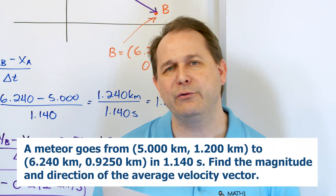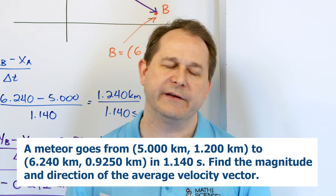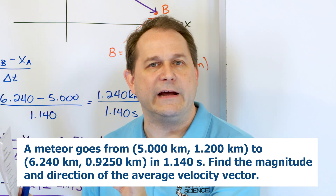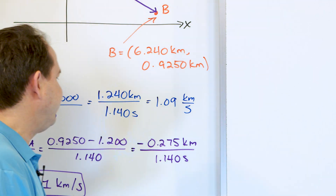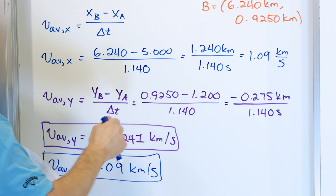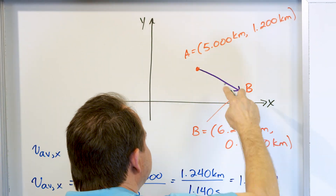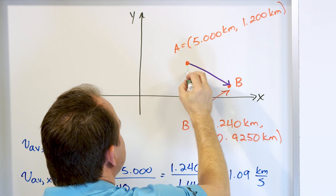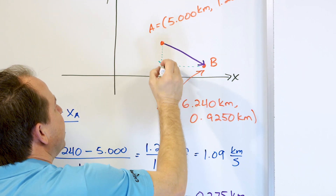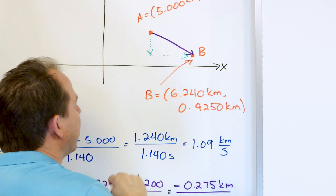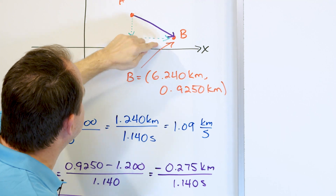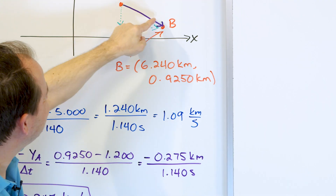Part B asks for the magnitude and direction of the average velocity vector. There are really two ways to represent a vector. The first way is to specify the x and y components, which is what we've done. The path and velocity are slanted, but we can break it into an x-component and a y-component, which we just calculated. The second way is to specify the length of the vector arrow and the angle it makes — that's what part B asks for.